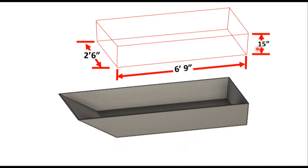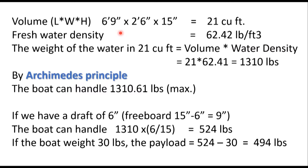For now, we ignore the blue shape in our calculation. The volume of the red box, 6 feet 9 inches, 2 feet 6 inches, and 15 inches come up to 21 cubic feet, and the fresh water density is 62 pounds per cubic feet. The weight of the 21 cubic feet of water is 1300 pounds.